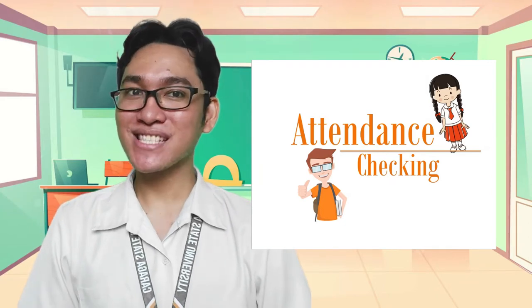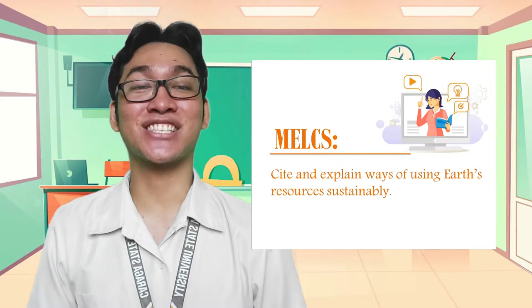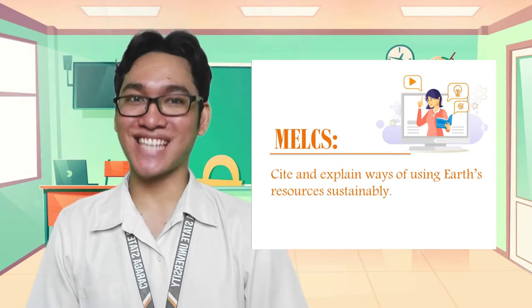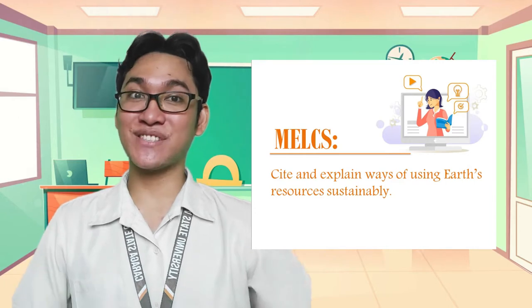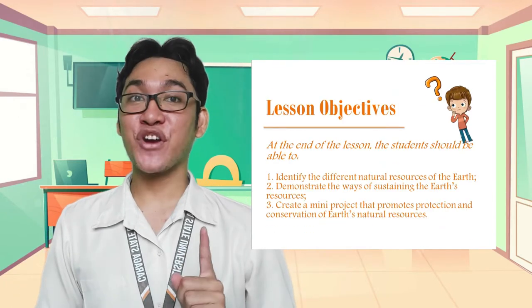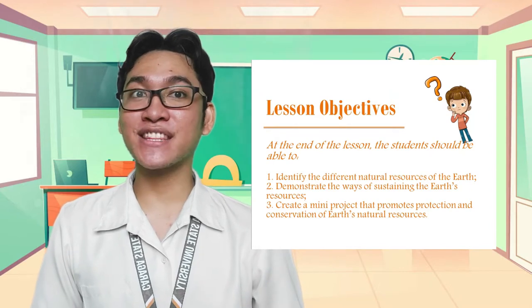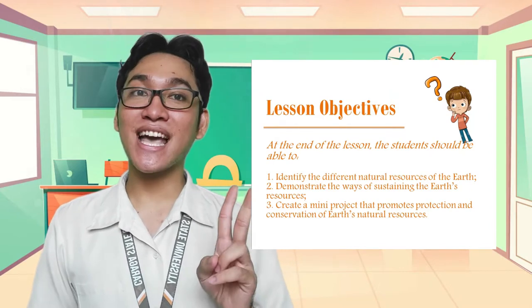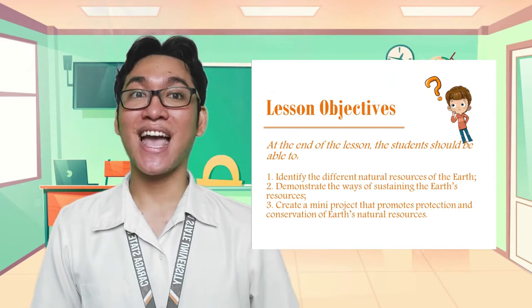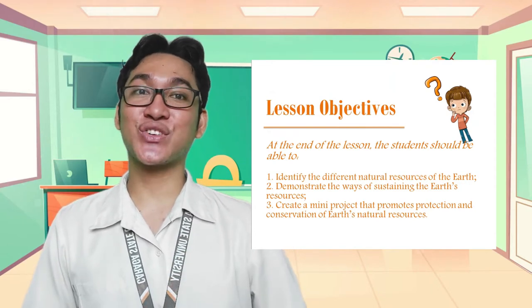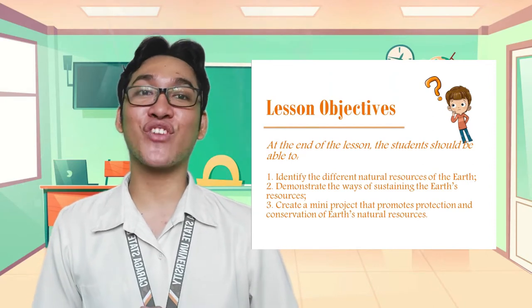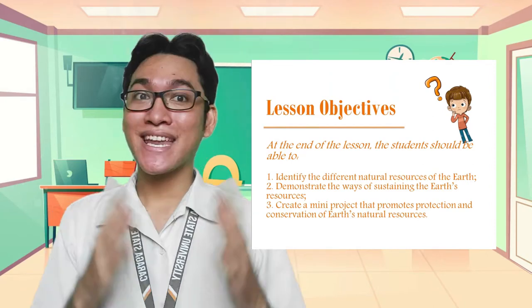For our class today, the most essential learning competency is to cite and explain ways of using Earth's resources sustainably. For our lesson objectives today, at the end of the lesson, the students will be able to: first, identify the different natural resources of the Earth; second, demonstrate the ways of sustaining the Earth's resources; and third, create a mini project that promotes protection and conservation of Earth's natural resources.